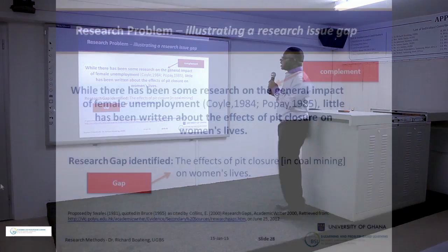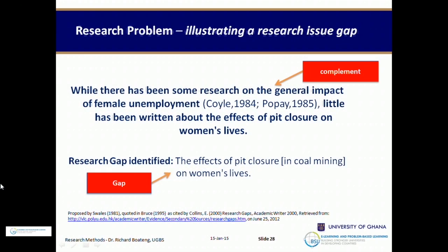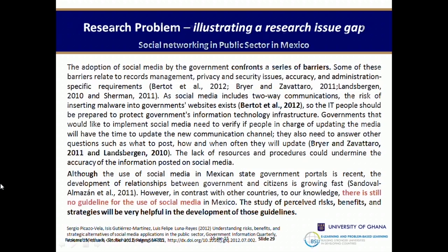Here is an example of an issue gap: 'While there has been some research on the general impact of female unemployment, little has been written about the effects of pit closure on women's lives.' The author acknowledges what has been done — research on female unemployment — and then points out what has not been done: research on the effects of pit closure on women's lives in the extractive industry. This makes a case for the need for more research on female employment after a pit closes.